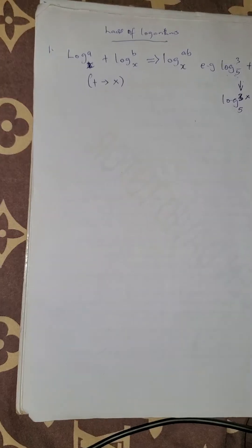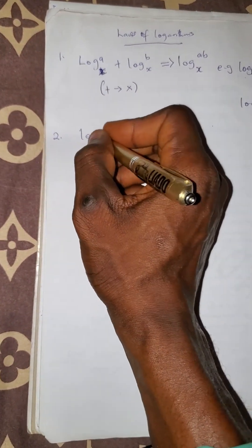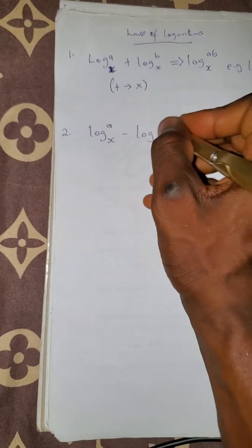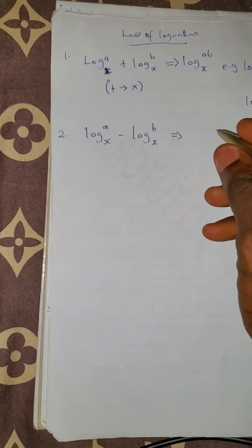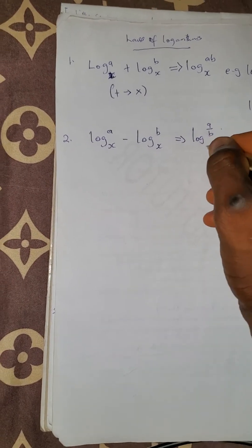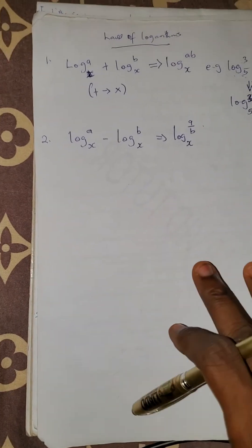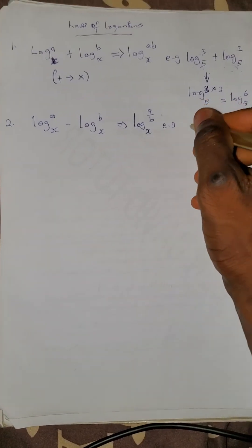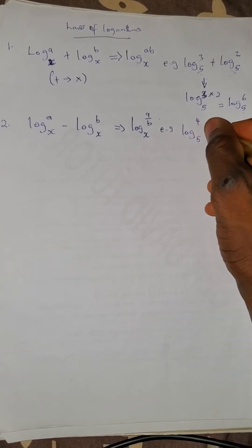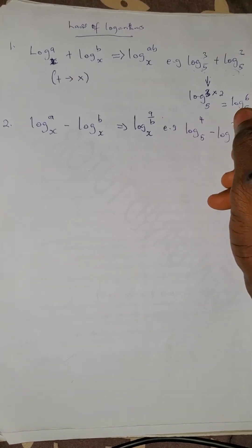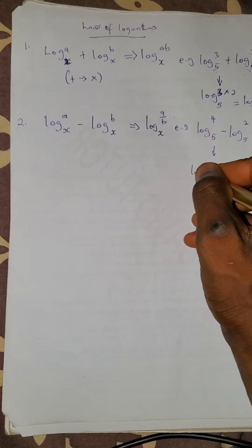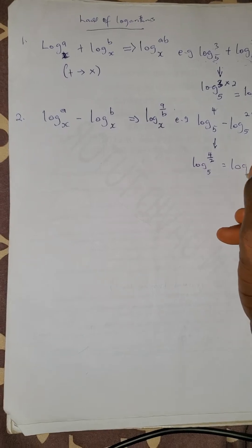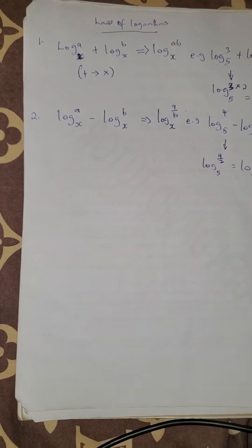The second law: if you have log a base x minus log b base x, and they have the same base, then the subtraction changes to division. It becomes log of a over b, base x. For instance, log 4 base 5 minus log 2 base 5 becomes log of 4 divided by 2, base 5.